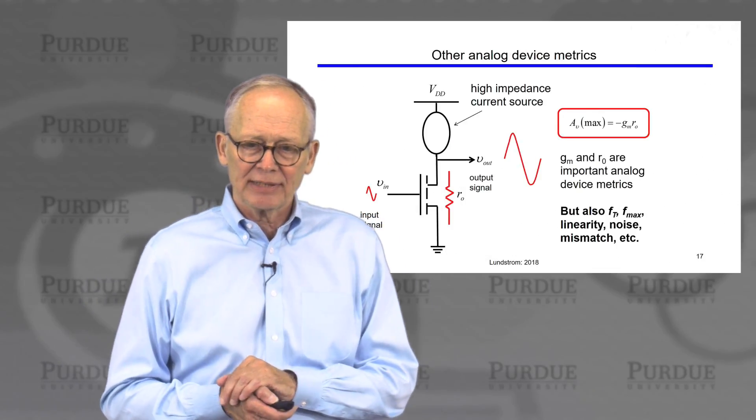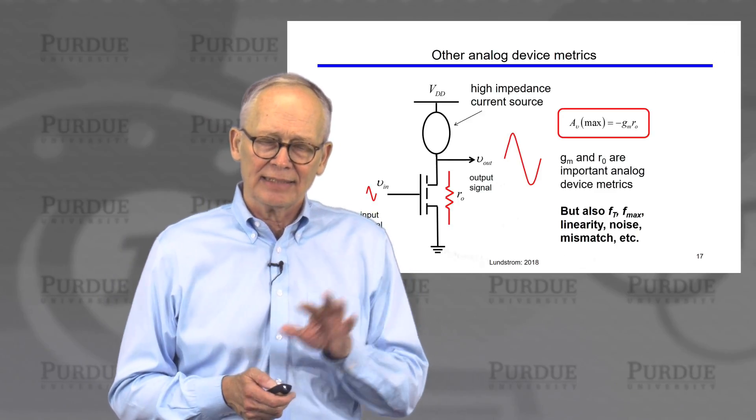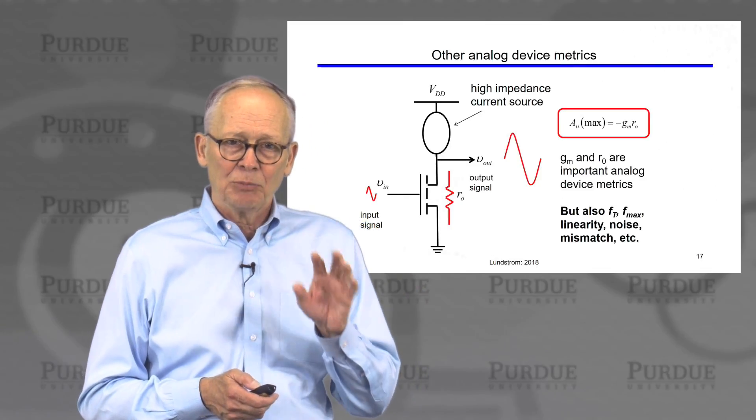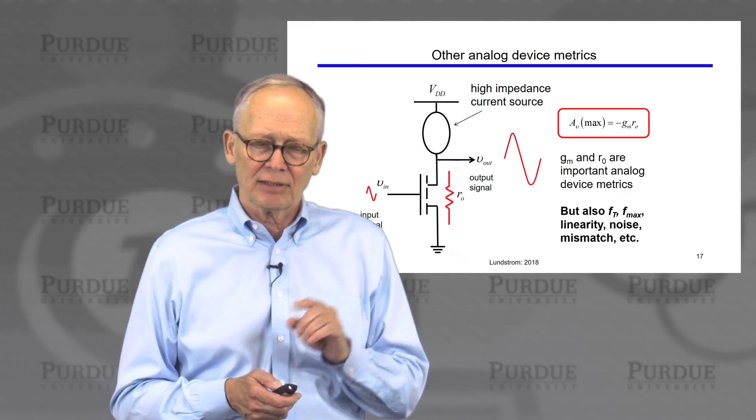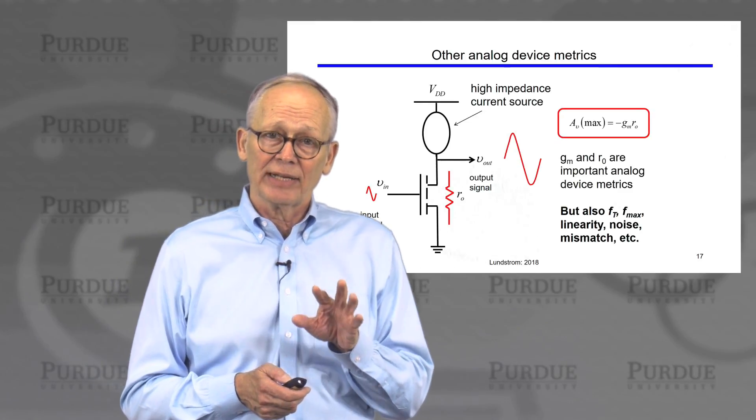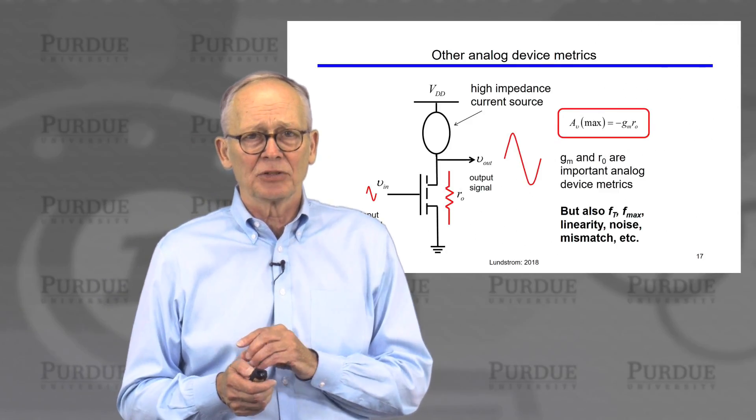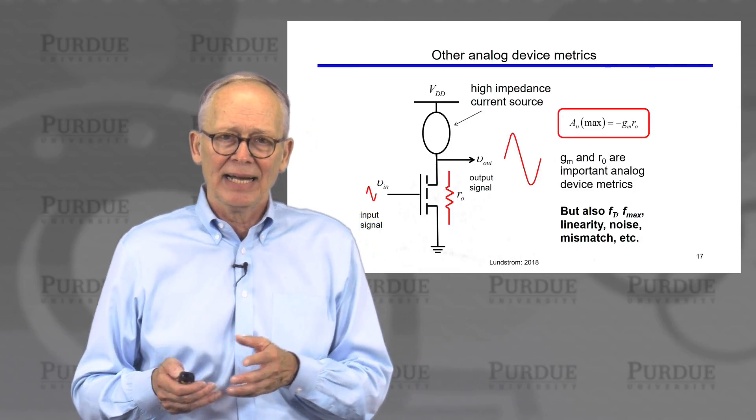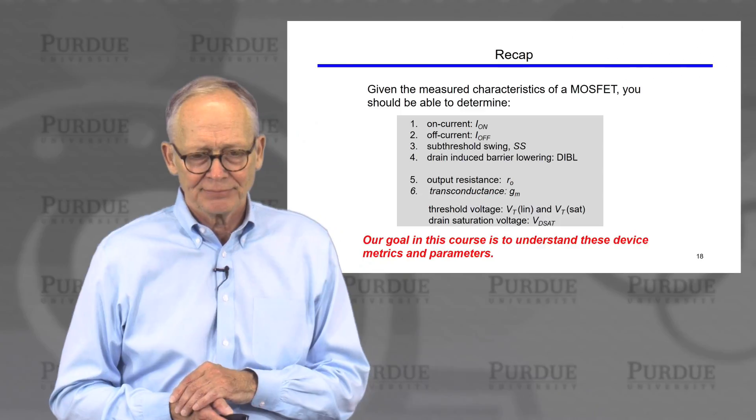Okay, so the analog device metrics then, the key ones that are easiest to estimate for a transistor characteristic are transconductance, output resistance, multiply the two together, that gives us a self-gain. If the device looks like it's potentially interesting for analog applications, then we could dive deeper into some of the other metrics that are a little more involved to measure: FT, Fmax, linearity, noise, etc.